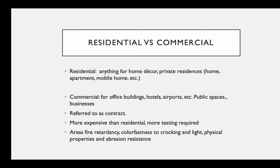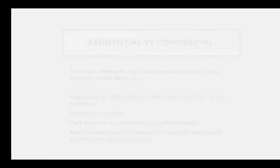Contract fabrics are more expensive than residential and more testing is required. Key areas tested include fire retardancy, color fastness to crocking and light, physical properties, and abrasion resistance. The average person doesn't think about this, but consider how much abuse you give your furniture — throwing yourself on a couch — or how much sun hits your curtains or a chair near a window. Sun exposure will cause fading, so you have to take that into consideration.